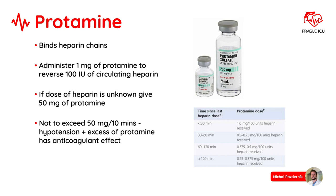Protamine binds heparin chains. We administer 1 mg of protamine to reverse 100 units of circulating heparin. If the dose of heparin is unknown, give 50 mg of protamine. We shouldn't exceed 50 mg over 10 minutes as hypotension might occur, and excess protamine also has an anticoagulant effect. The dose of protamine used is dependent on the time since the last dose of heparin was given, as seen in the table on the right.